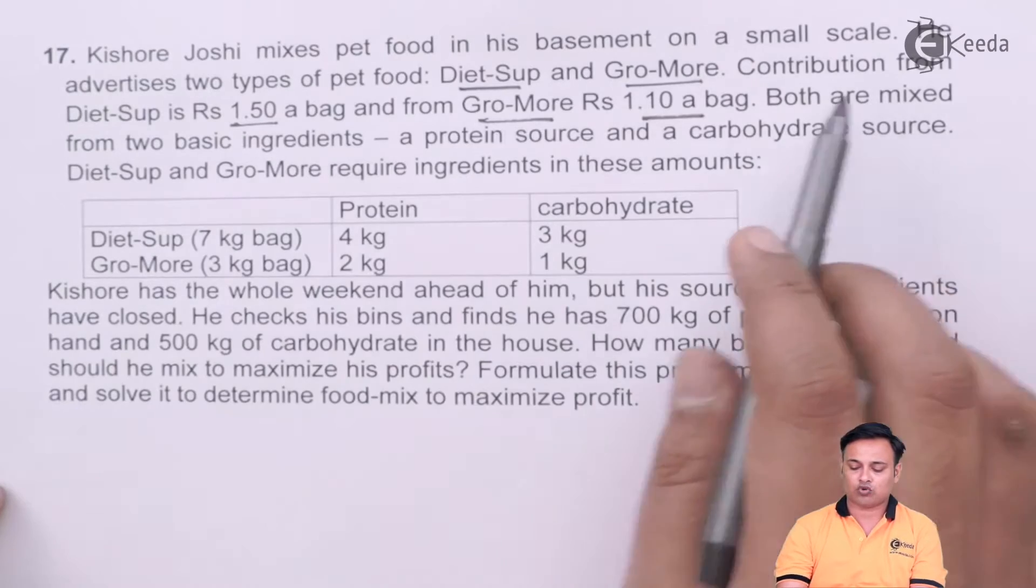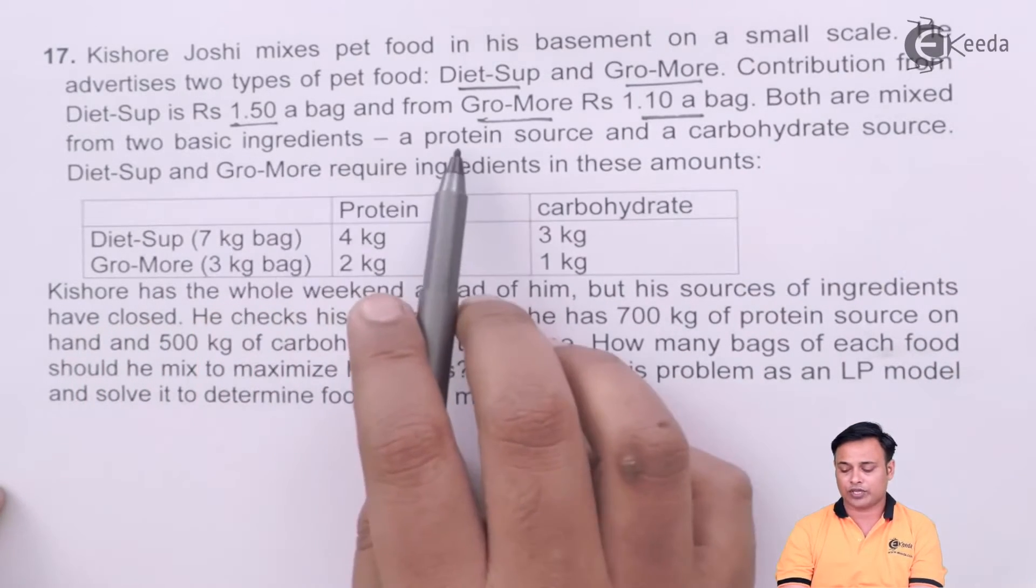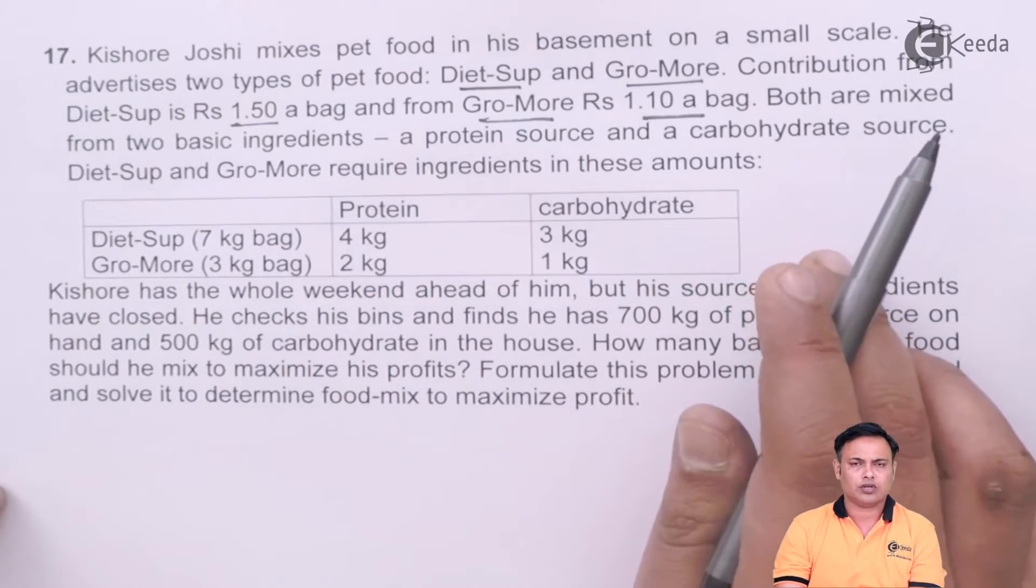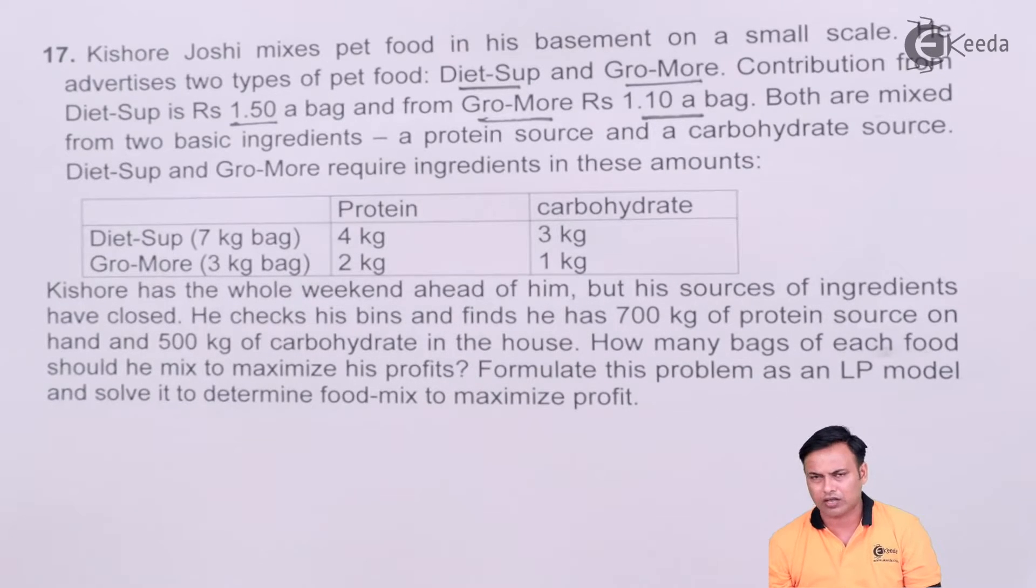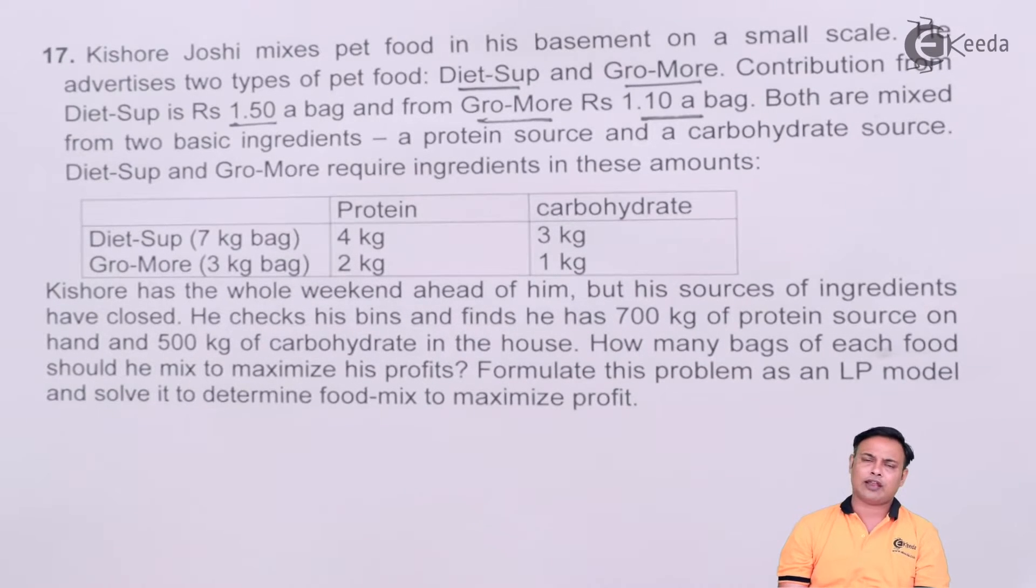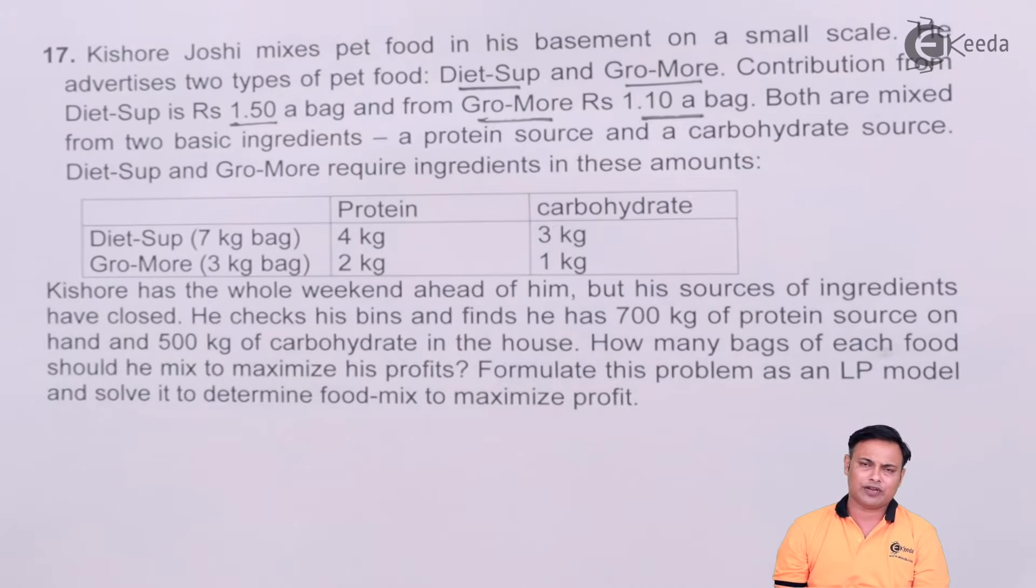Both are mixed from two basic ingredients, that is a protein source and a carbohydrate source. So we have basically two raw materials, one is based on protein and one is based on carbohydrates. We mix them in a particular ratio or particular quantity and what we get is two different mixes, one is Diet-Sup and one is Gro-More.